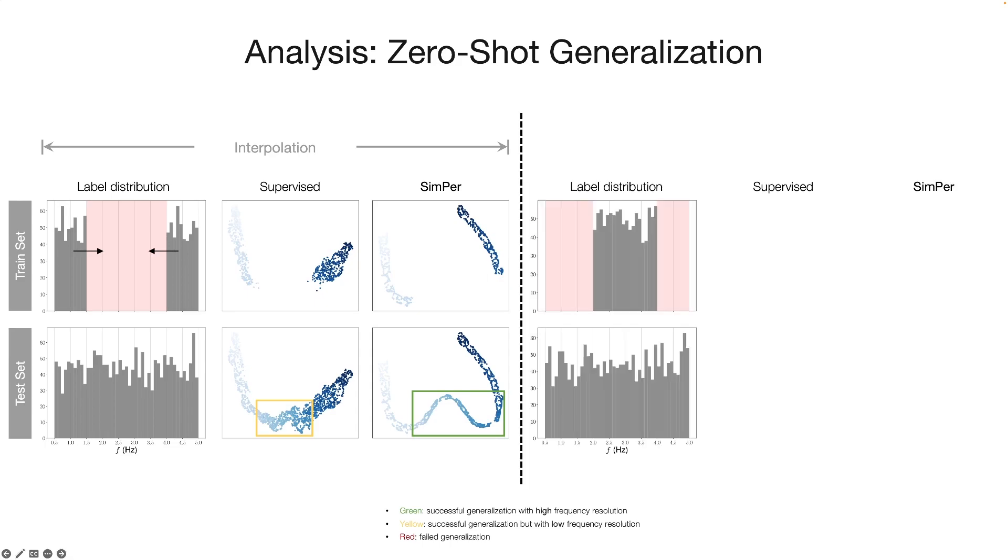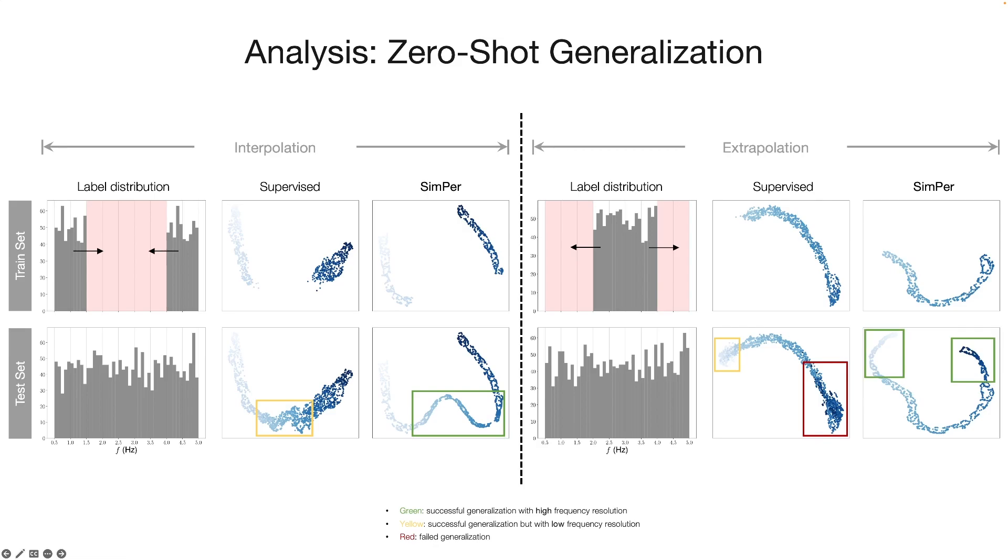Next, we look at the case of extrapolation, where the algorithm needs to generalize outside of the training range. For the supervised baseline in the lower frequency range, it extrapolates reasonably well. However, for the higher frequency range, it completely fails to generalize, with learned features largely overlapping with the existing frequency targets in the training set. In contrast, SIMPER is able to generalize robustly even for the unseen higher frequency range, demonstrating that it generalizes to distribution shifts and unseen targets.